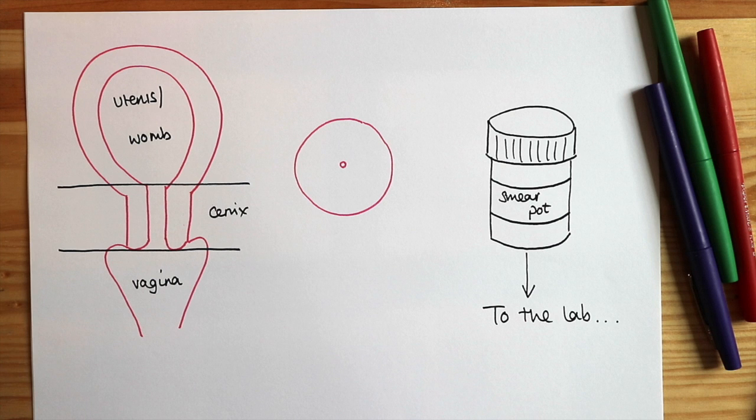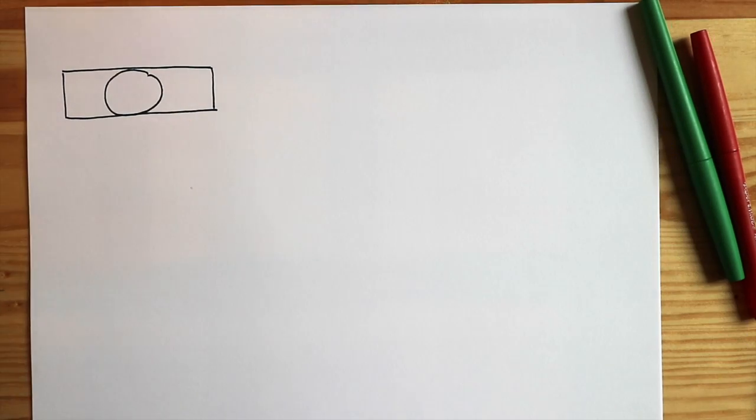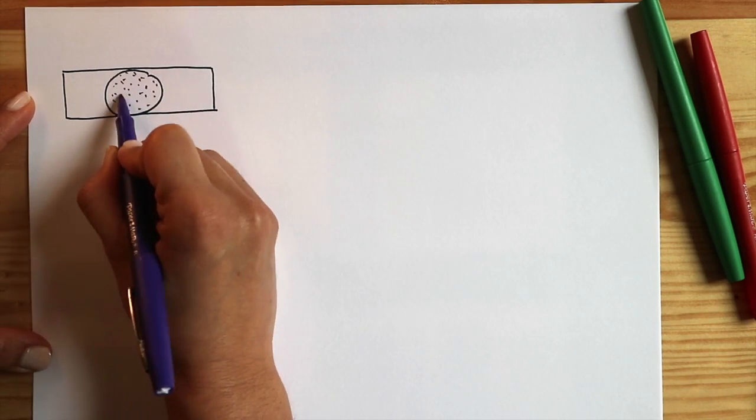When it gets to the lab, we take a small amount of this preservative and put it onto a microscope slide. This slide is then stained with some dyes so that we can look at the different kinds of cells that are present under the microscope.